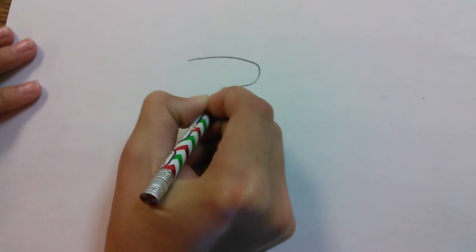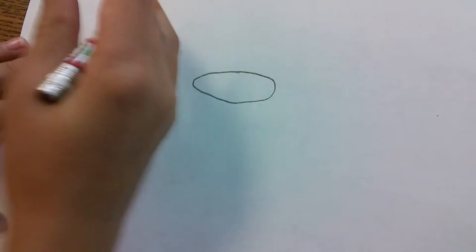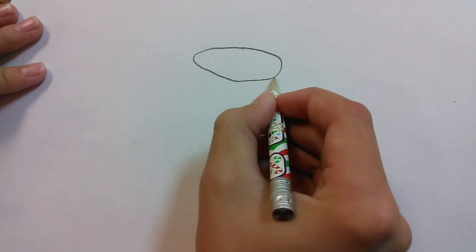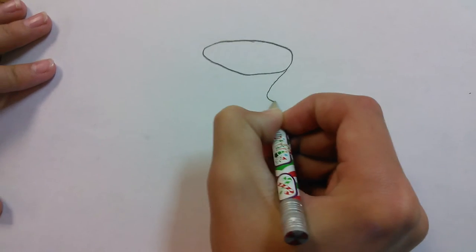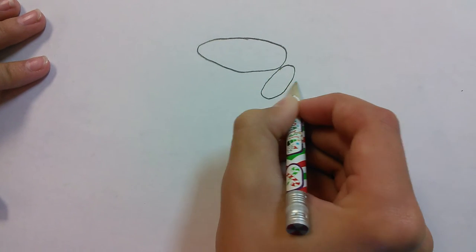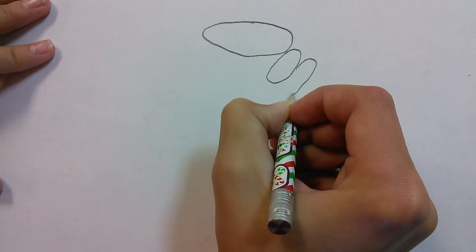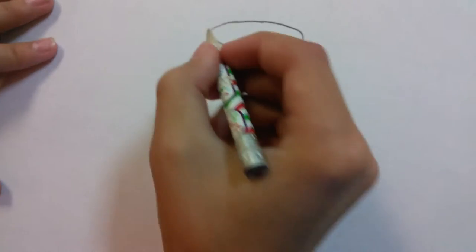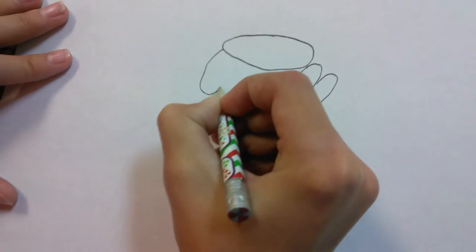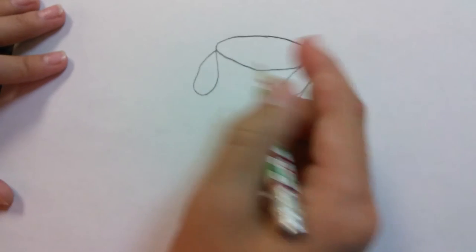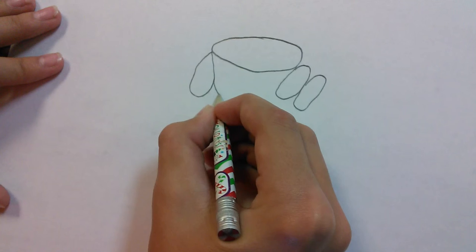First you're going to draw a circle and then you're going to draw two more and you're going to be drawing one right here. Then you're going to be taking this one.